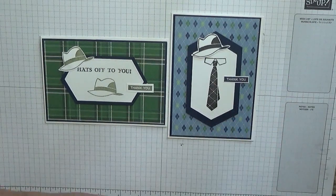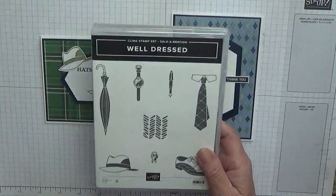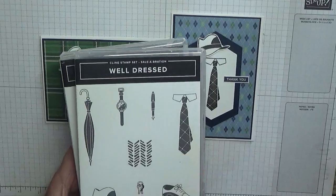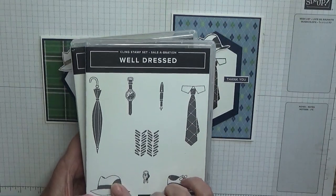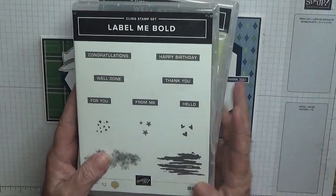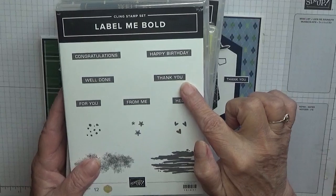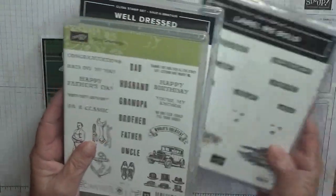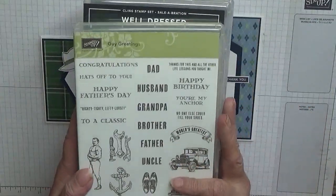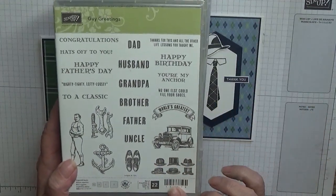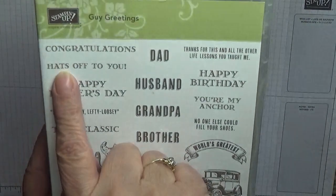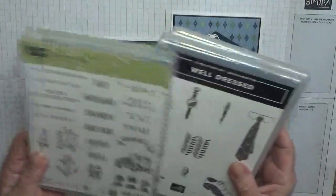To make these cards I've used three stamp sets. I've used Well Dressed and I'm going to use the tie for one and the hat for both. The sentiment I'm using is Label Me Bold and I'm just going to use the word thank you. On the hat one I have stamped 'Hats Off To You' and I've got that from this really old One Guy's Greeting set.